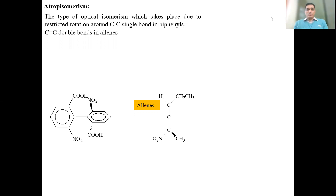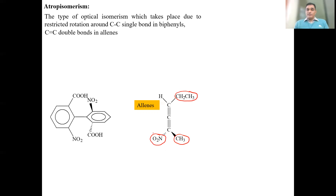In allenes, if all the end carbon atoms had only H substituents, we would simply call it an allene. But now this is a substituted allene — it has NO2 groups instead of H everywhere. So these substituted allenes are called allenes. Among the three carbon atoms, the double bonds cause restricted rotation here as well.